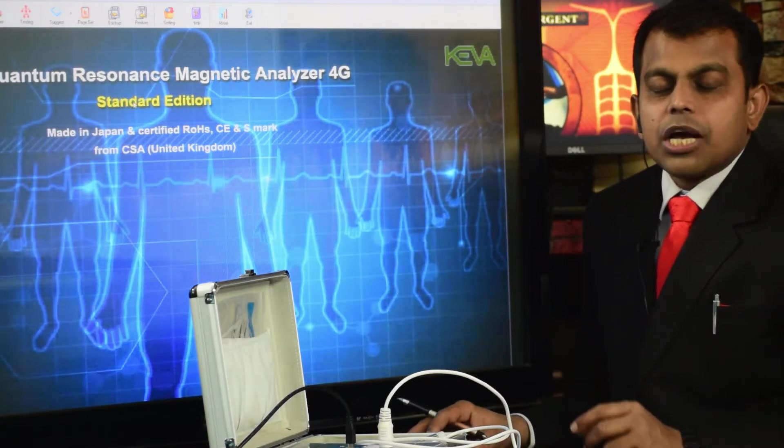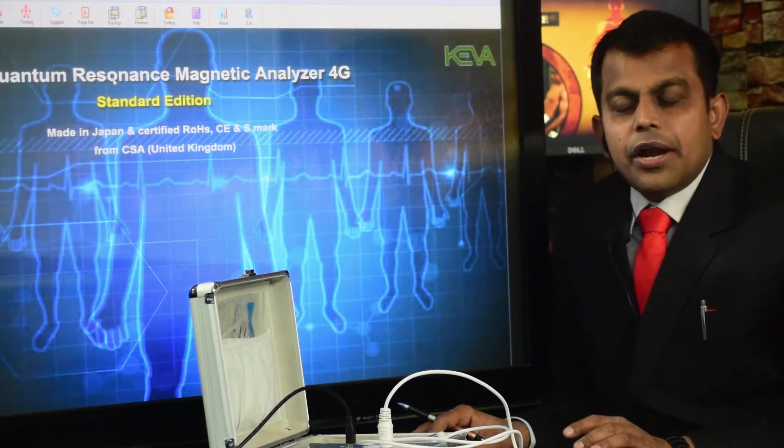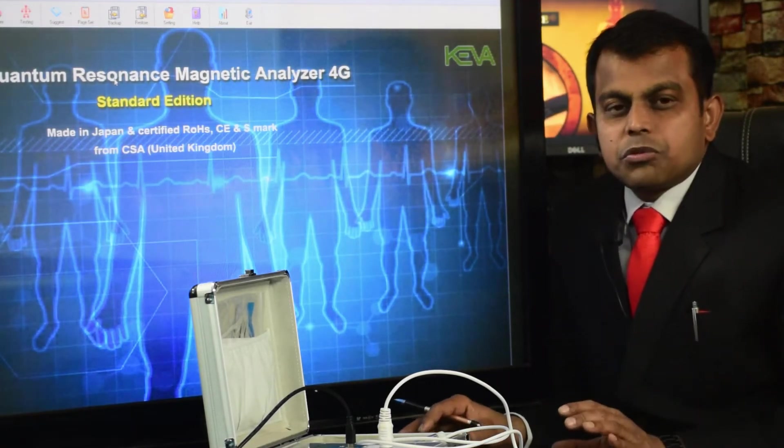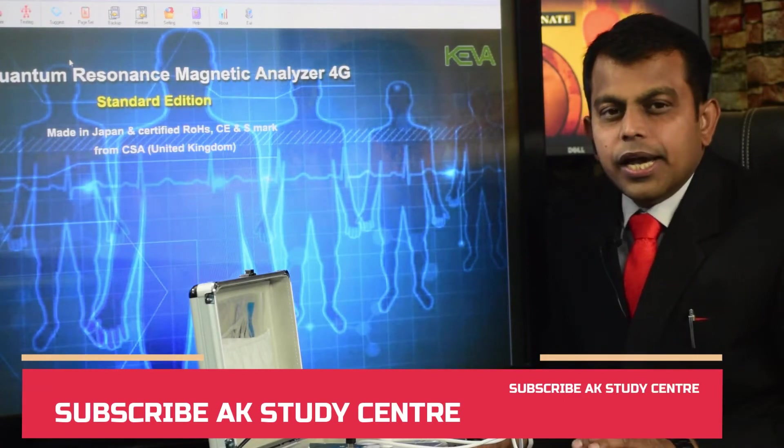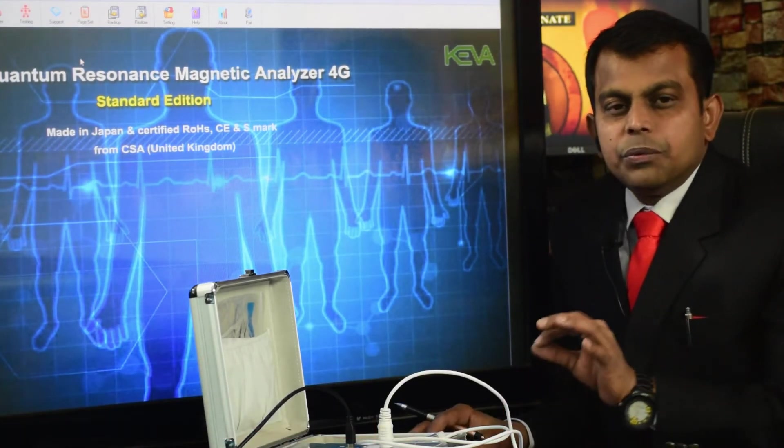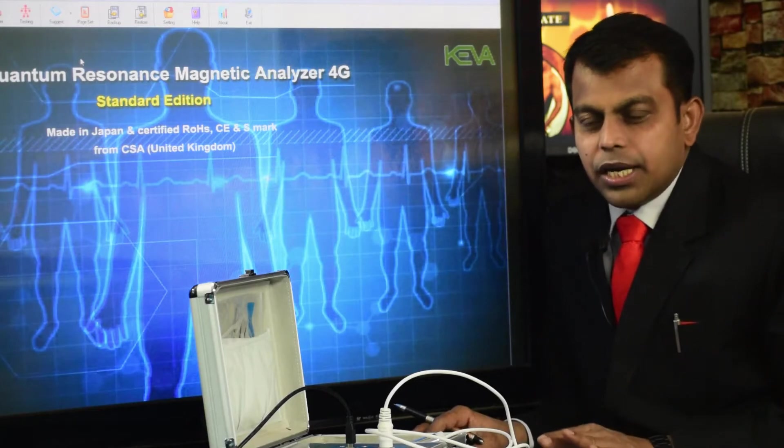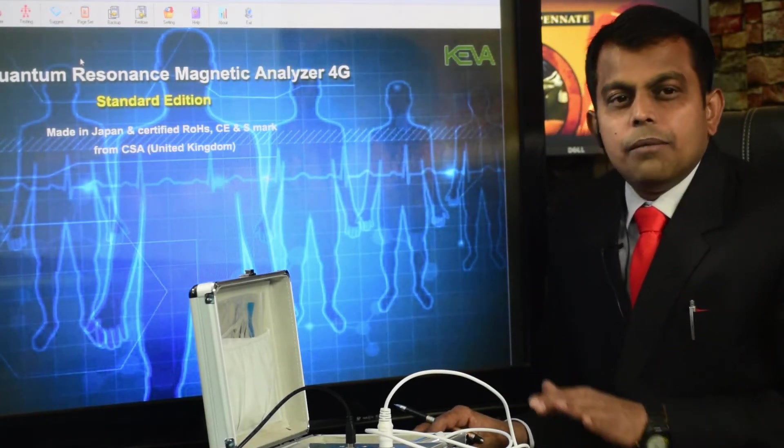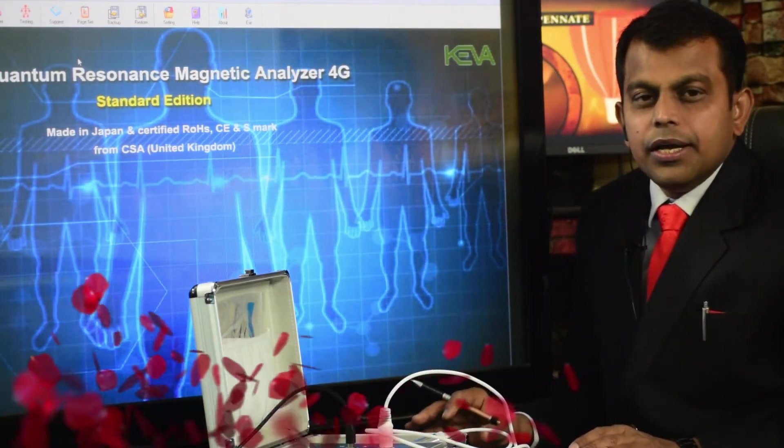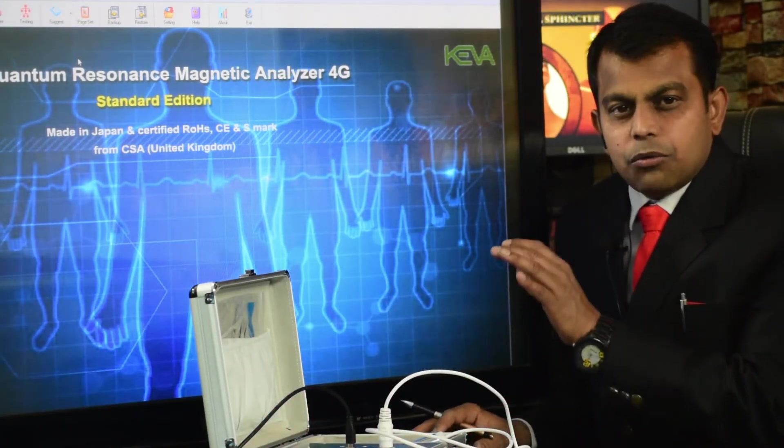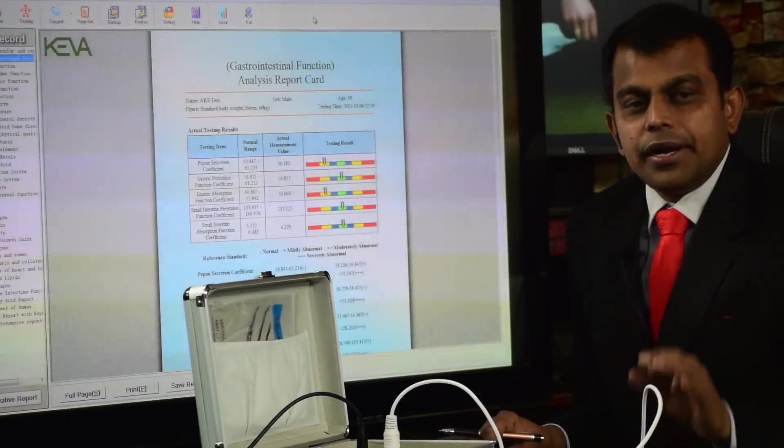[Hindi] This QMRA, Quantum Magnetic Resonance Analyzer machine, provides health and wellness related reports. The latest machine in the market provides about 53 reports. However, for technical reasons, we hide some reports like blood sugar level and thyroid tests.